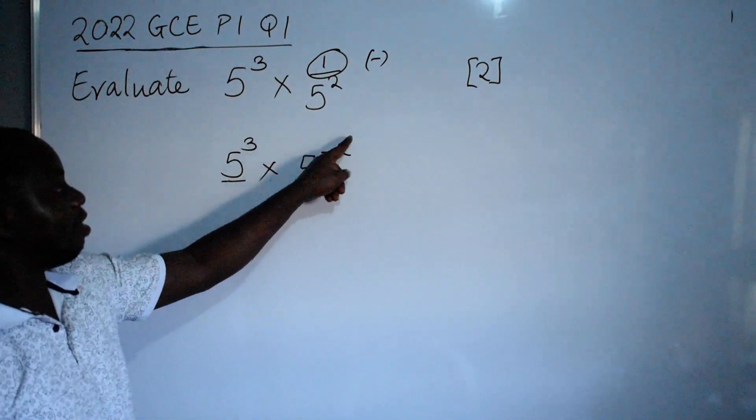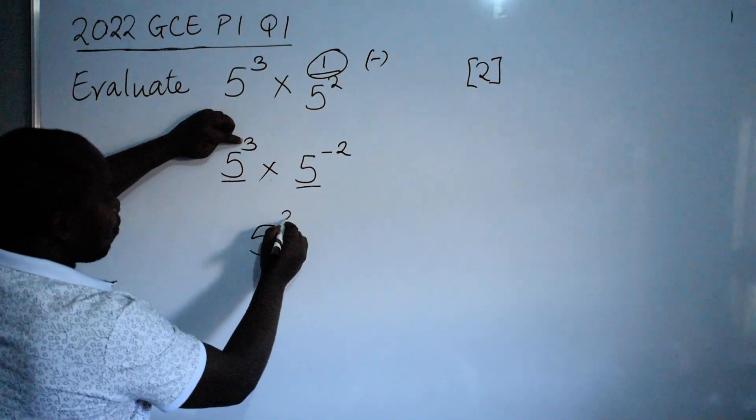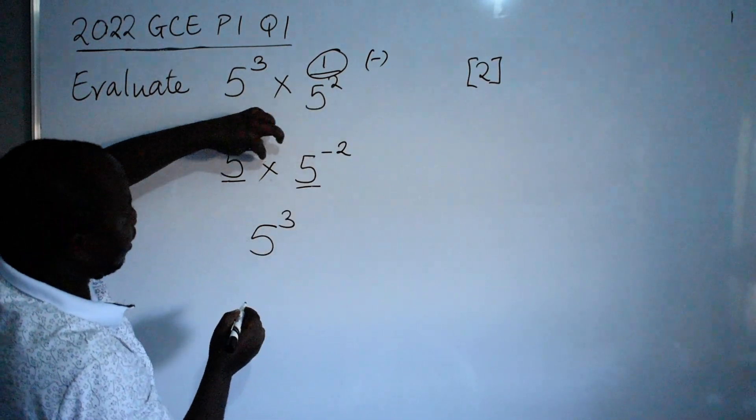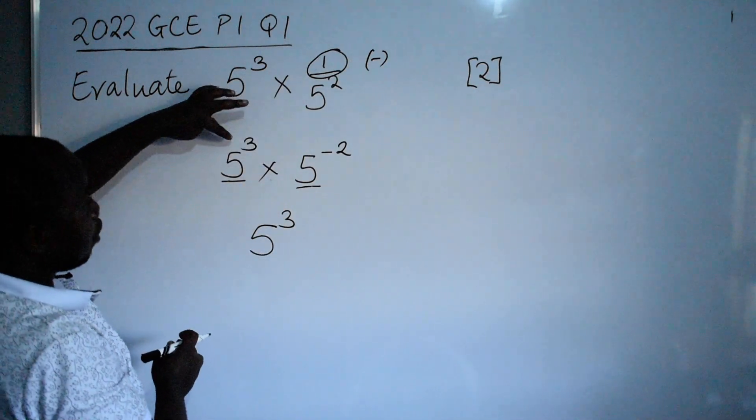So we are going to write 5, the powers that we have are 3, so we are adding because we have a multiplication here. If it was division you would subtract. So we are going to say 3 plus negative 2.